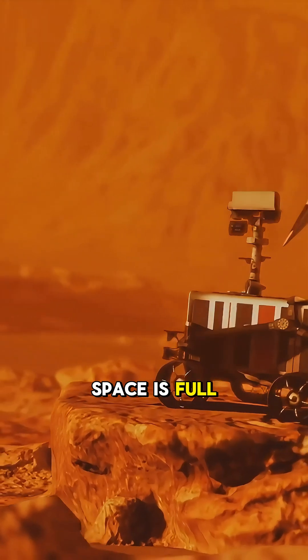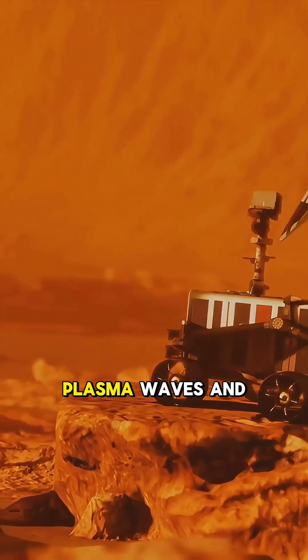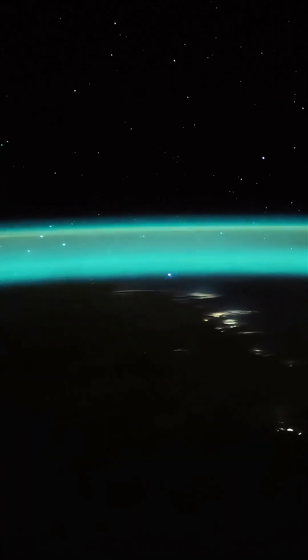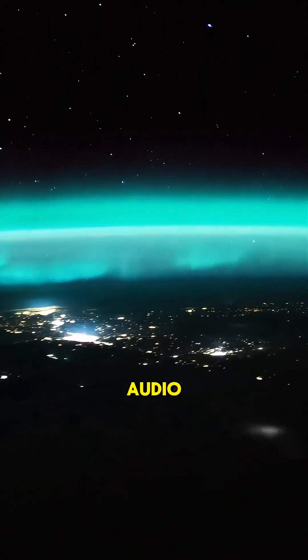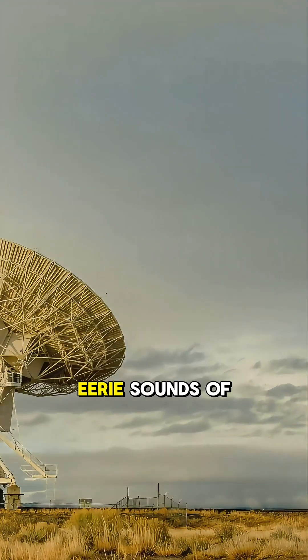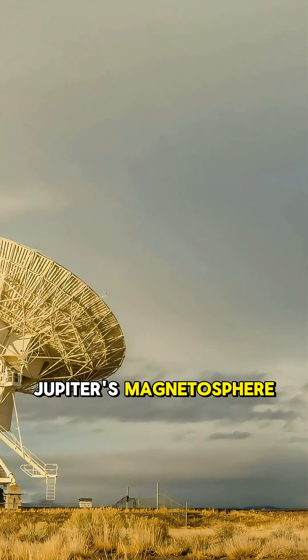Even more incredible, space is full of electromagnetic waves, plasma waves, and magnetic pulses. We cannot hear them directly, but scientists can translate them into audio. That is how we get the eerie sounds of Jupiter's magnetosphere or the strange chorus of solar storms.